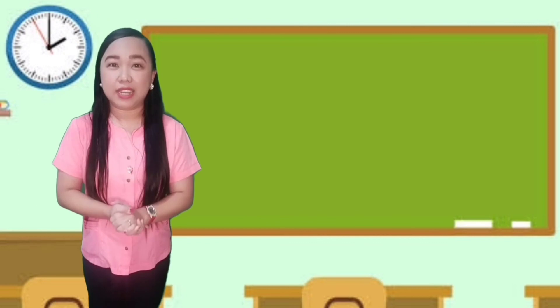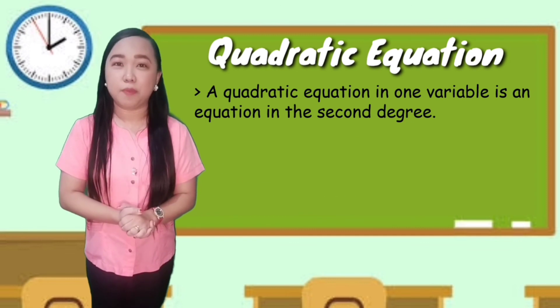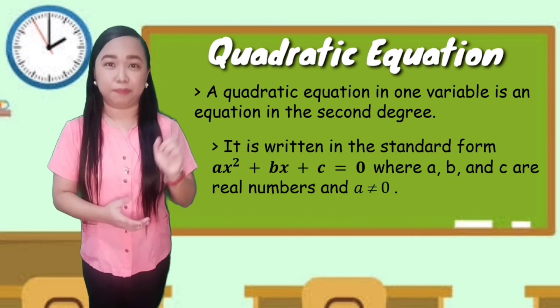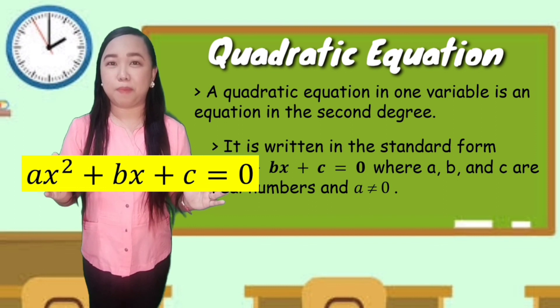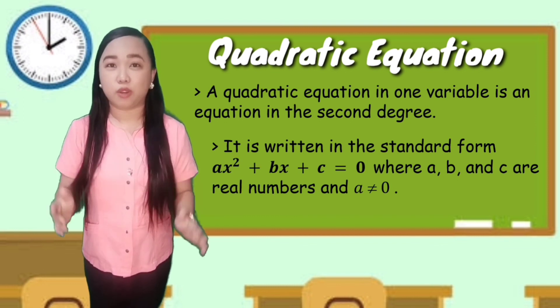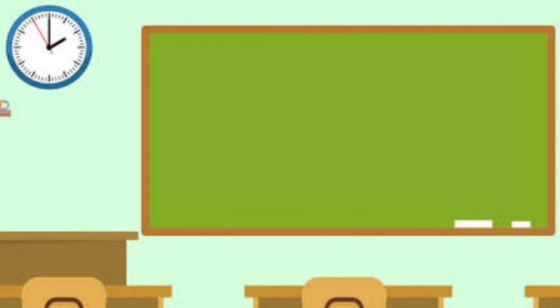We are done illustrating quadratic equations. To sum it up: a quadratic equation in one variable is an equation in second degree. The standard form is ax squared plus bx plus c equals 0, where a, b, and c are real numbers and a is not equal to 0. Nothing is difficult in this world — it's our thinking which makes it difficult. Learn to love mathematics, and math will love you back! Goodbye, everyone!